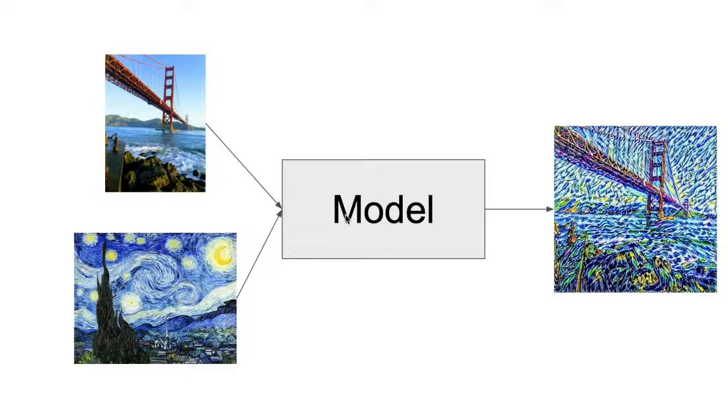What's special about style transfer is that the model itself is not being updated in the optimization stage. That is, when we apply gradient descent, or stochastic gradient descent, or Adam, or RMSprop, we are not actually updating the model itself. What we are updating is the input image.